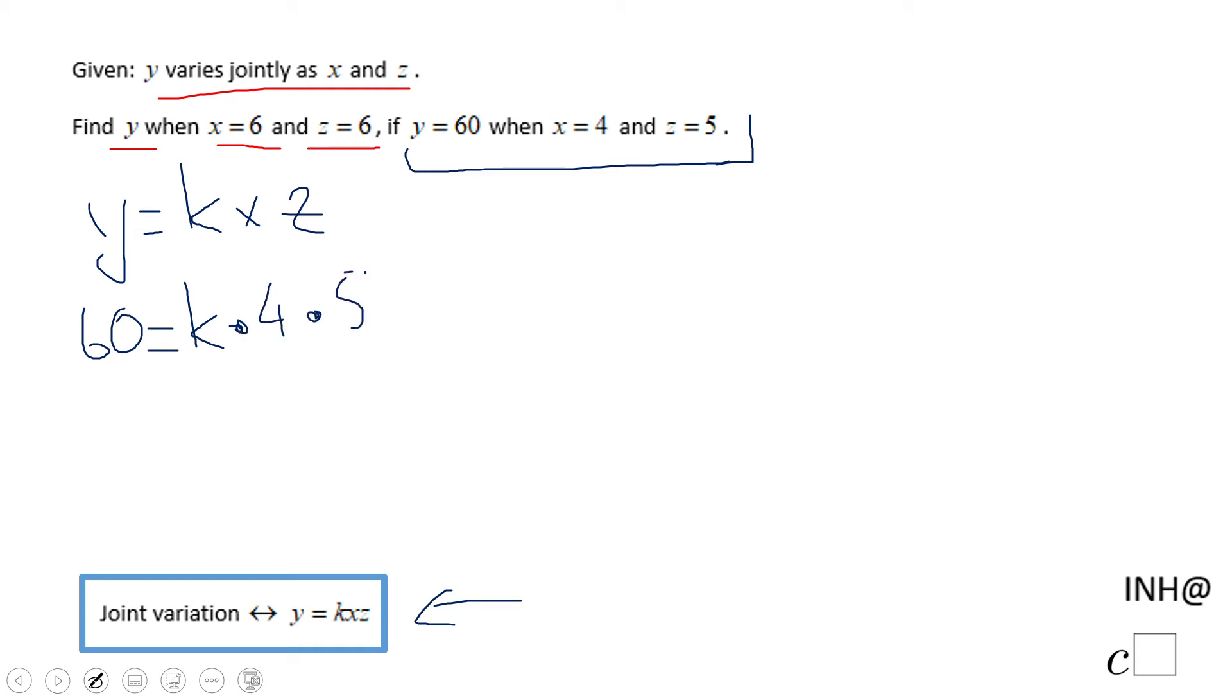So for finding K, we're gonna divide by 4 times 5, or 20, and we end up with K equals 3. This is the constant of variation, and now we can go to the second part of the problem.